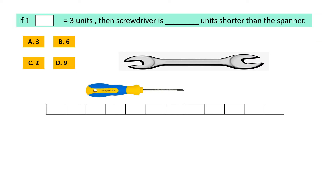If one rectangular box is equal to 3 units, then the screwdriver is dash units shorter than the spanner. Option A: 3. Option B: 6. Option C: 2. Option D: 9.